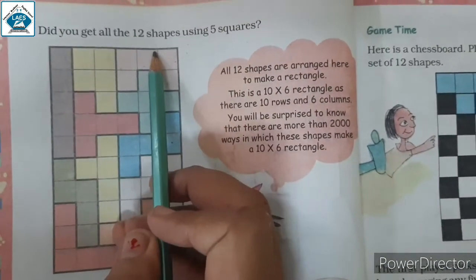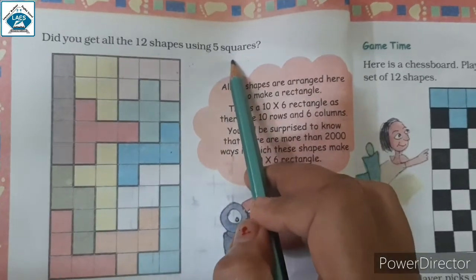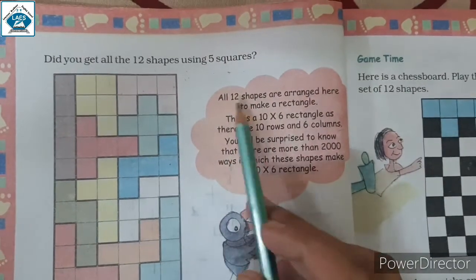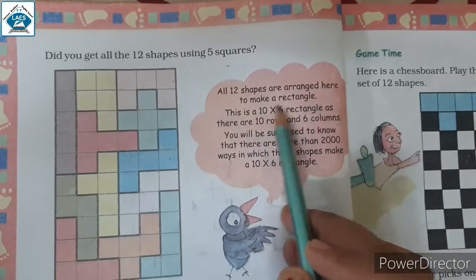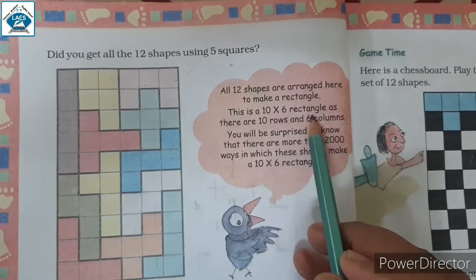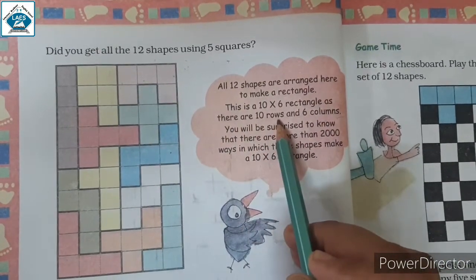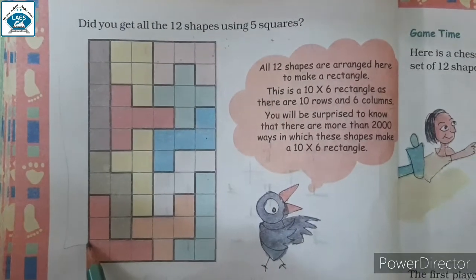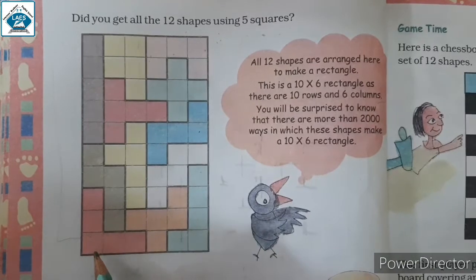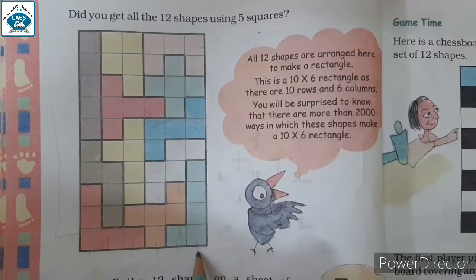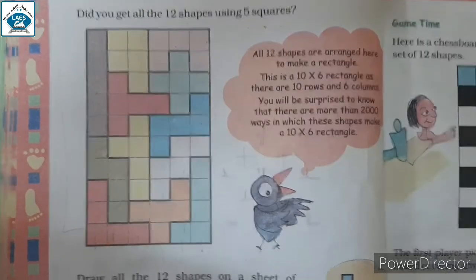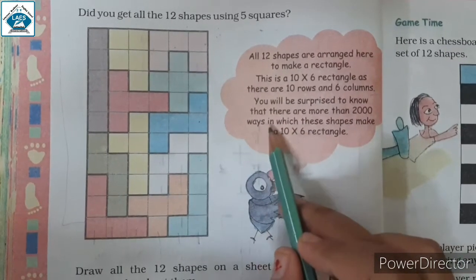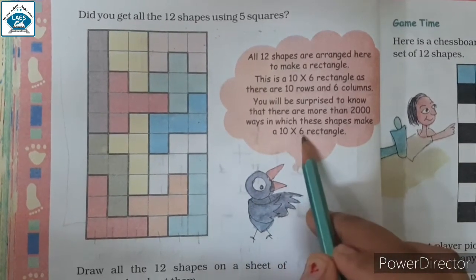Did you get all 12 shapes using 5 squares? Yes, we got that. All 12 shapes are arranged here to make a rectangle. This is a 10 by 6 rectangle. There are 10 rows and 6 columns — 1, 2, 3, 4, 5, 6 columns. You will be surprised to know that there are more than 2,000 ways in which these shapes make a 10 by 6 rectangle.